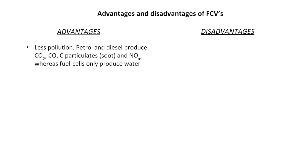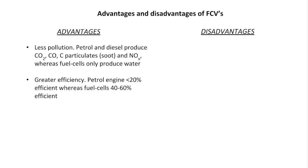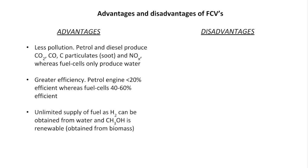Advantages of fuel cell vehicles: less pollution — petrol and diesel produce carbon dioxide, carbon monoxide, carbon particulates (soot), and nitrous oxides, whereas fuel cells only produce water. Fuel cells are far more efficient: petrol engines are typically less than 20% efficient, while fuel cells are between 40% and 60%. Finally, there's an effectively unlimited supply of fuel — hydrogen can be obtained from water via electrolysis, and methanol can be obtained from biomass, so both are renewable.